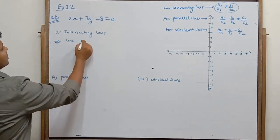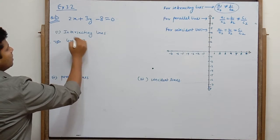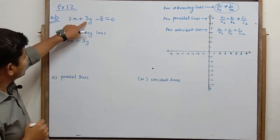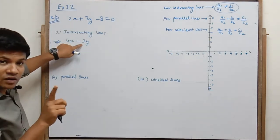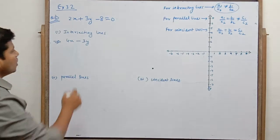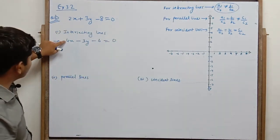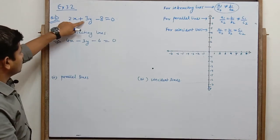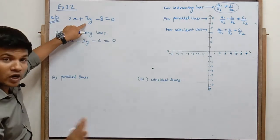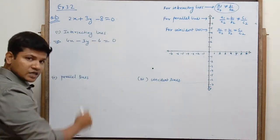तो यह मैं minus 3y देदू। अब देखो: 3/3 = 1 और यह minus 1 आ रहा है। यह half है, यह minus 1 है — दोनों equal नहीं हैं। And इसको कुछ भी दे तो, 6 equals to 0. Just check: 2/4 = 1/2 और 3/(−3) = −1. तो a1/a2 is not equal to b1/b2, so these two lines will make an intersecting line.